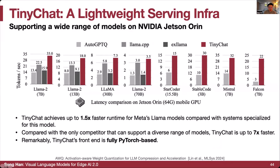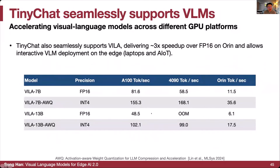Comparing different LLaMA models, coding models, Mistral, and Falcon, TinyChat can seamlessly support visual language models to accelerate them across different GPU platforms, delivering up to 3x speedup compared with the FP16 counterpart — on the 4090, on the Orin, and on the A100. On the Orin, it can run 35 tokens per second with AWQ VILA 7B.